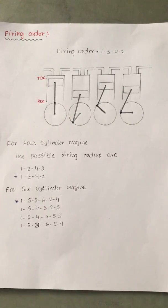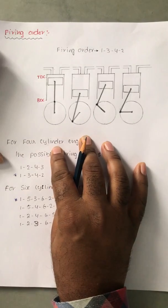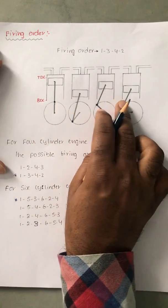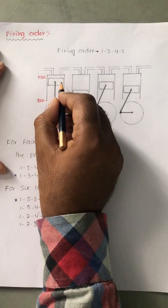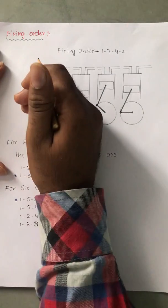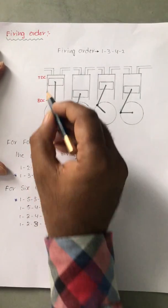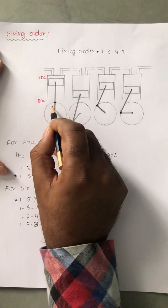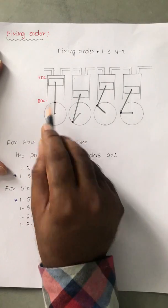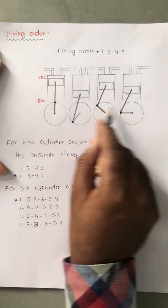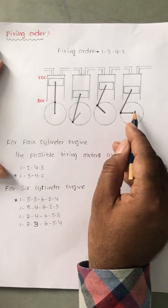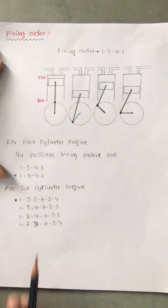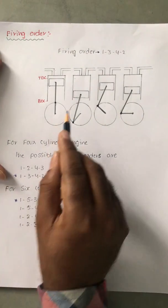In a multi-cylinder engine — for example, a two-, three-, or four-cylinder engine — if all the cylinders fire at the same time, that means all cylinders undergo compression and expansion simultaneously. Such a huge amount of work cannot be accommodated by a single crankshaft, since all cylinders are connected to one crankshaft. The crankshaft would be damaged.